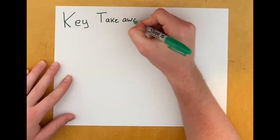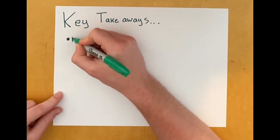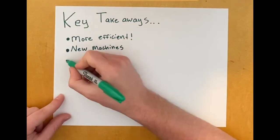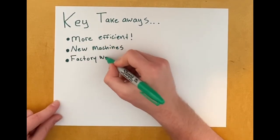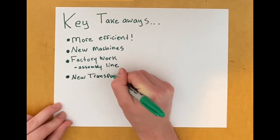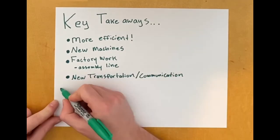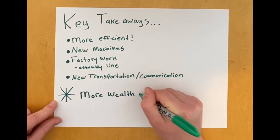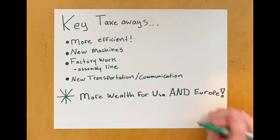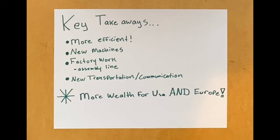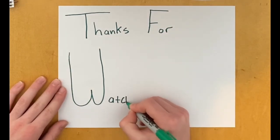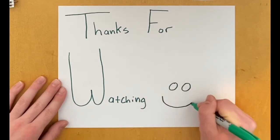Overall, here are some key takeaways. The industrial revolution was a time of great efficiency. We produced new machines and made new ways of work, such as factory work and the assembly line. We made new ways of transportation and communication, which brought more efficiency. We also created mass production, which led America to becoming more wealthy overall. Other nations during this time, such as Europe, also became more wealthy. Thanks so much for taking your time to watch this presentation. I hope what you learned will benefit you. I appreciate you watching and have a great rest of your day.